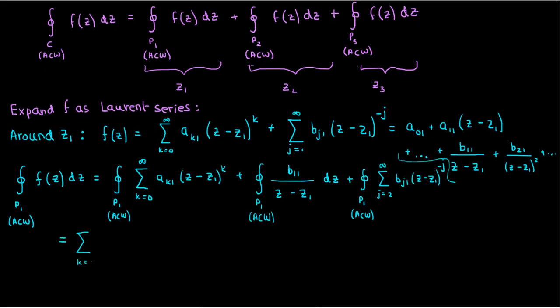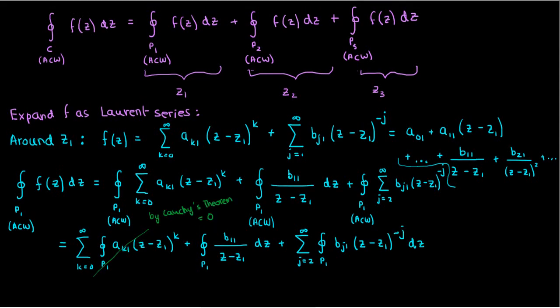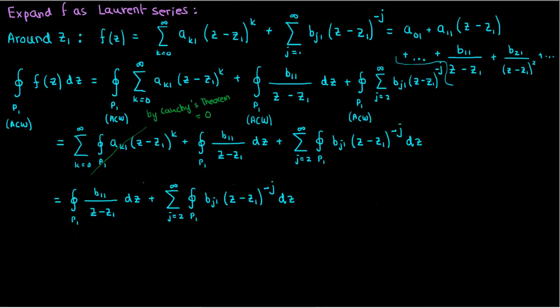I can switch the order of the integration and summation, which allows me to rewrite this expression as the following. Now the integrals for the analytic part of the Laurent series all disappear because of Cauchy's theorem, since the contour integral of a function over a region where it's holomorphic is zero. And this analytic portion corresponds to the part of the function that is holomorphic over that region.